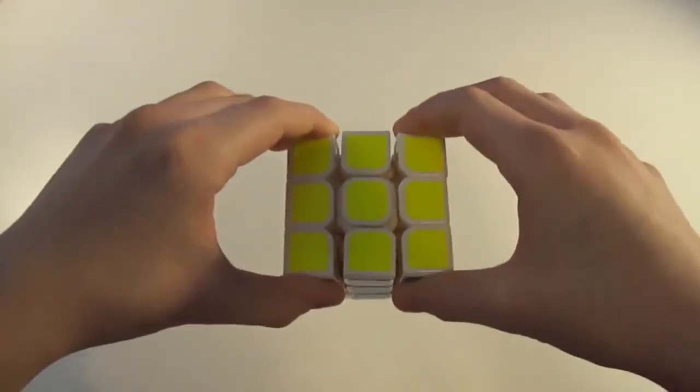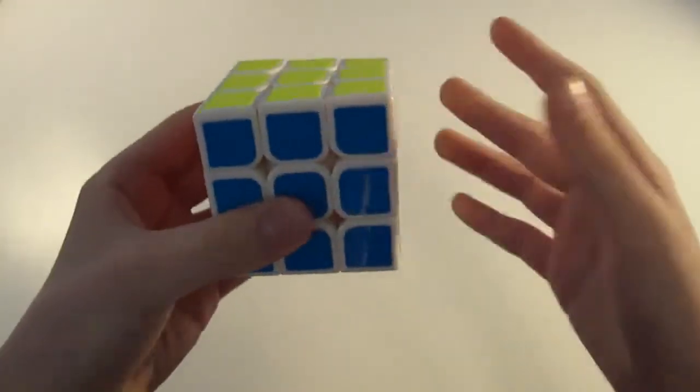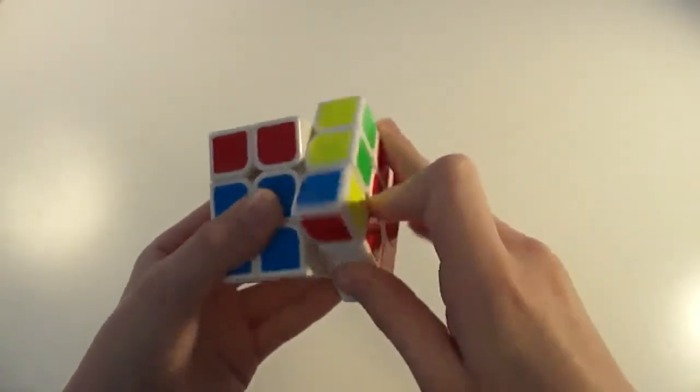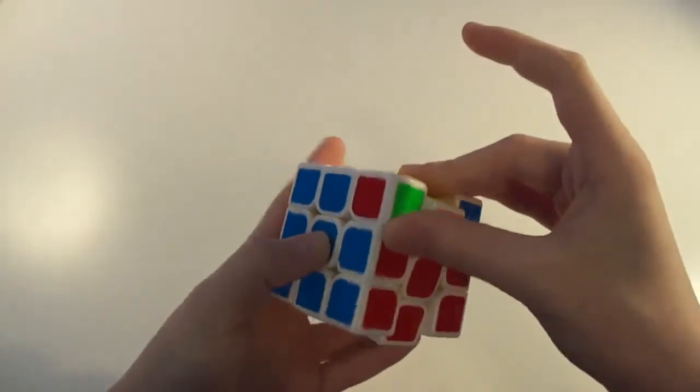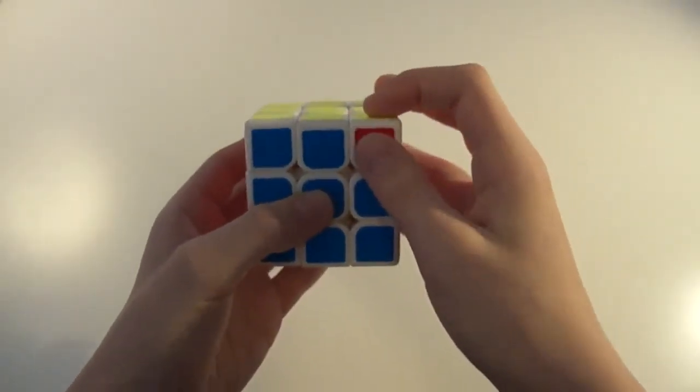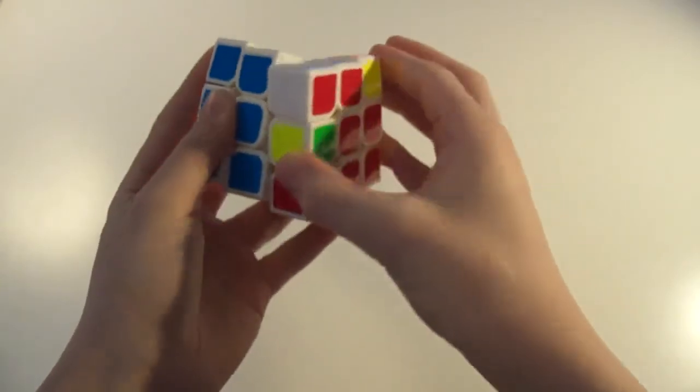A trick for having this algorithm be re-gripless is instead of grabbing the cube like this, because then you have to re-grip like that. You can start here with your thumb like this and then as you see your thumb is already there for the R'.